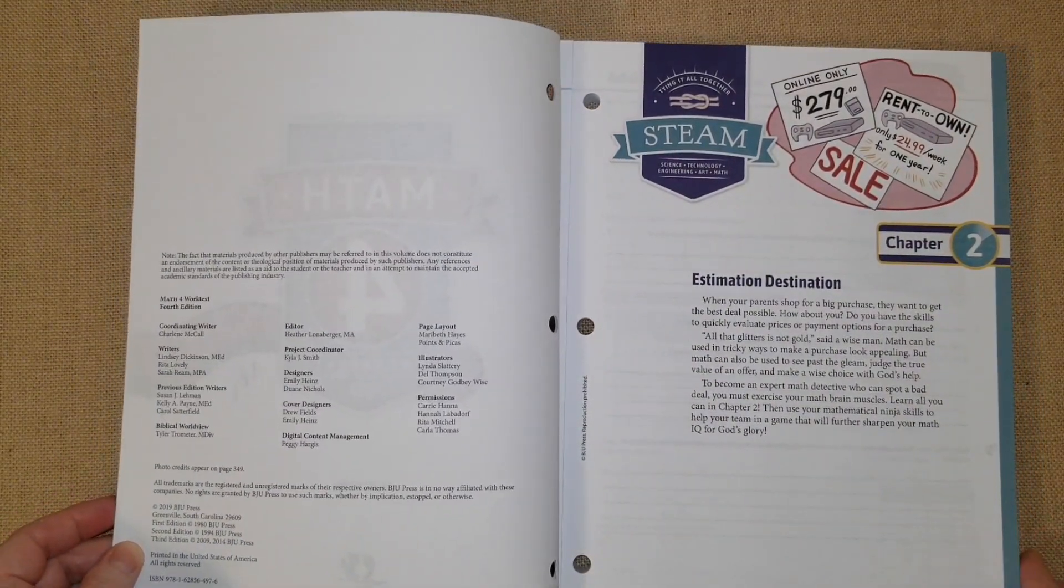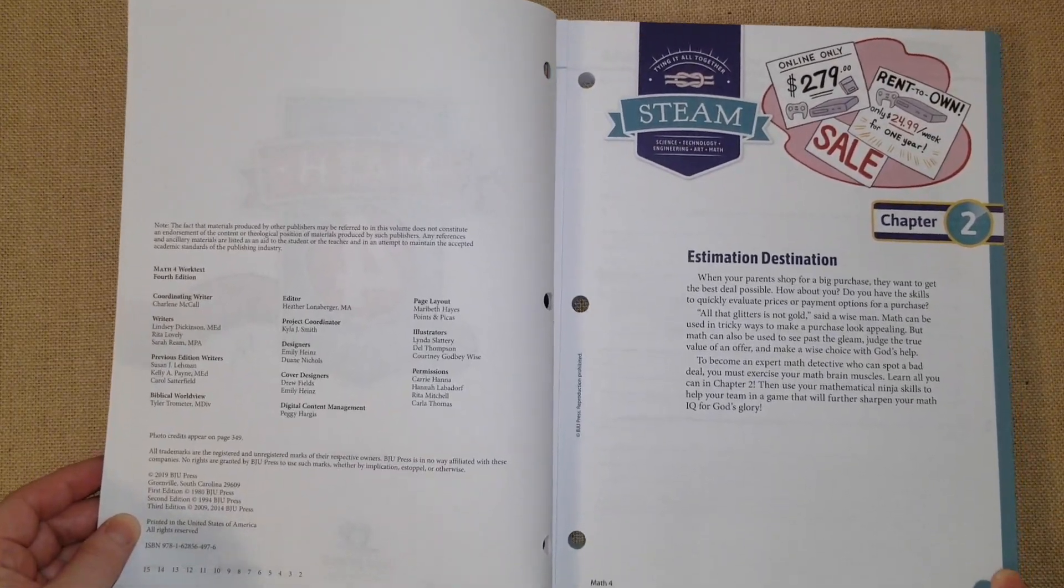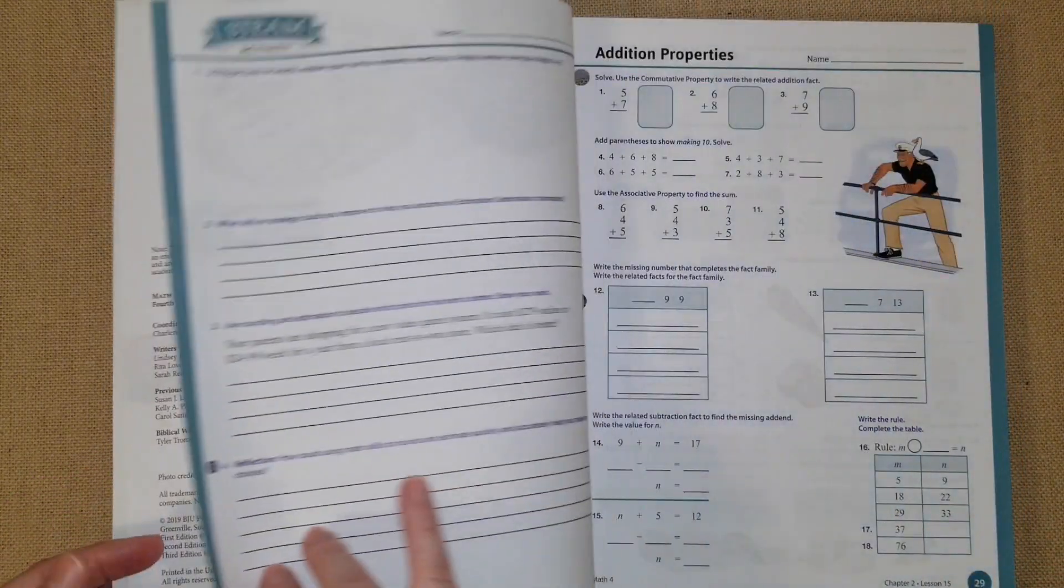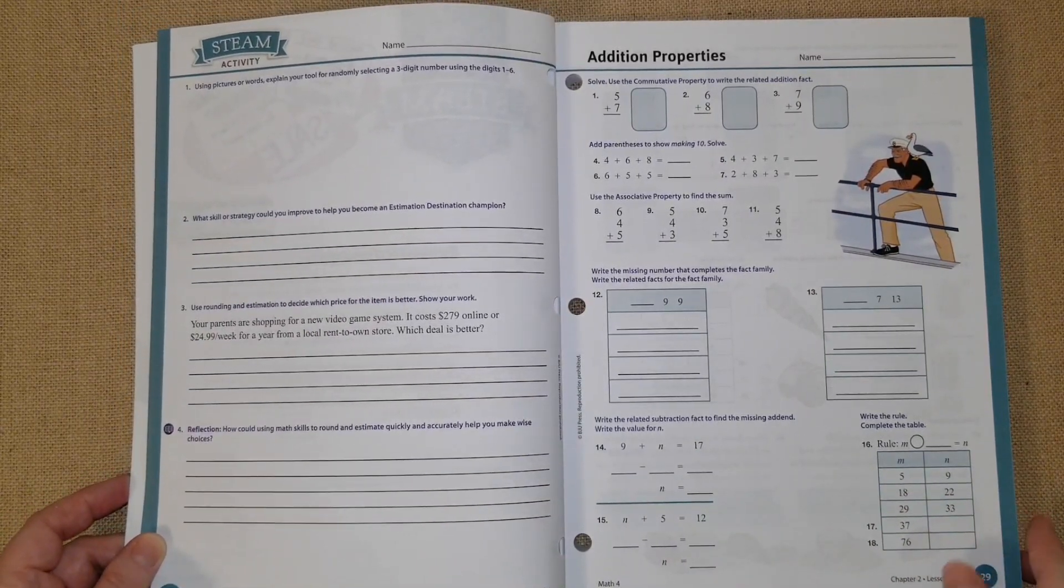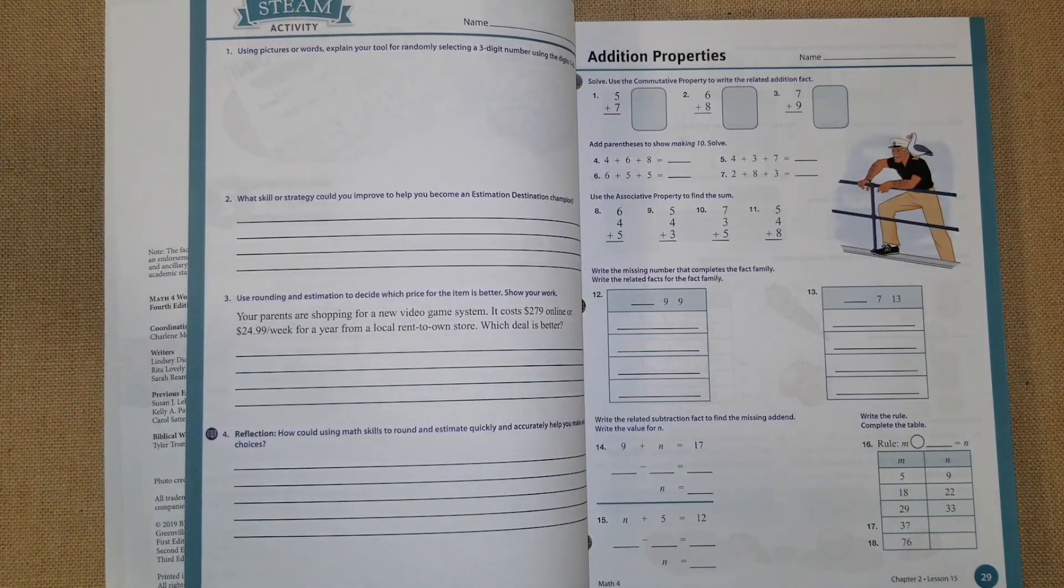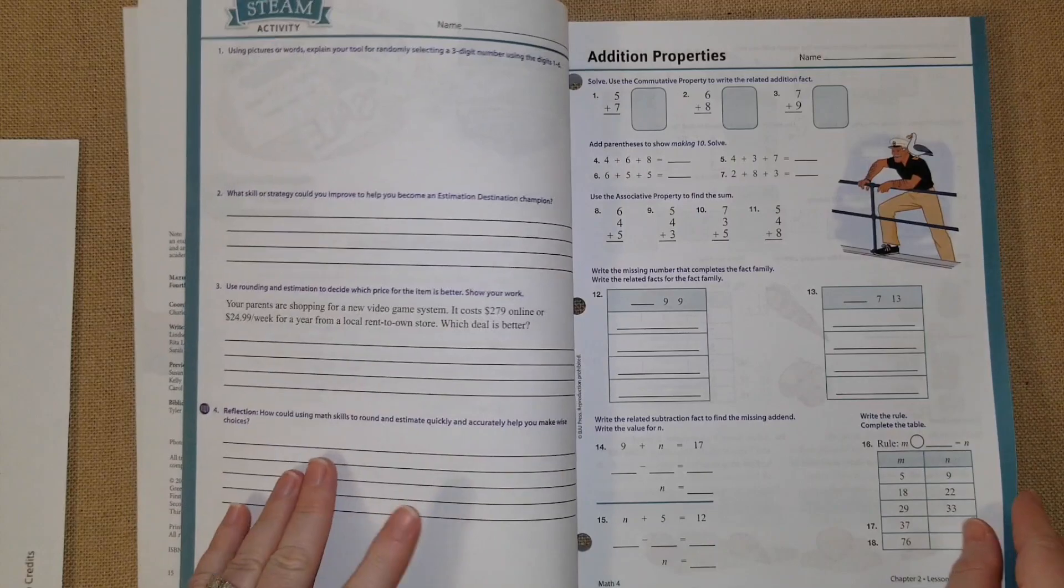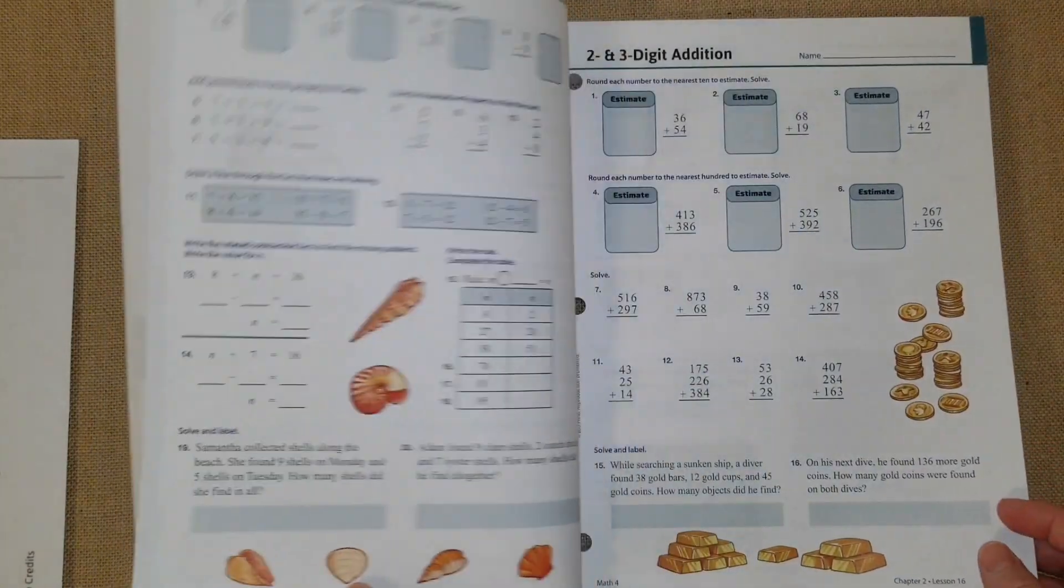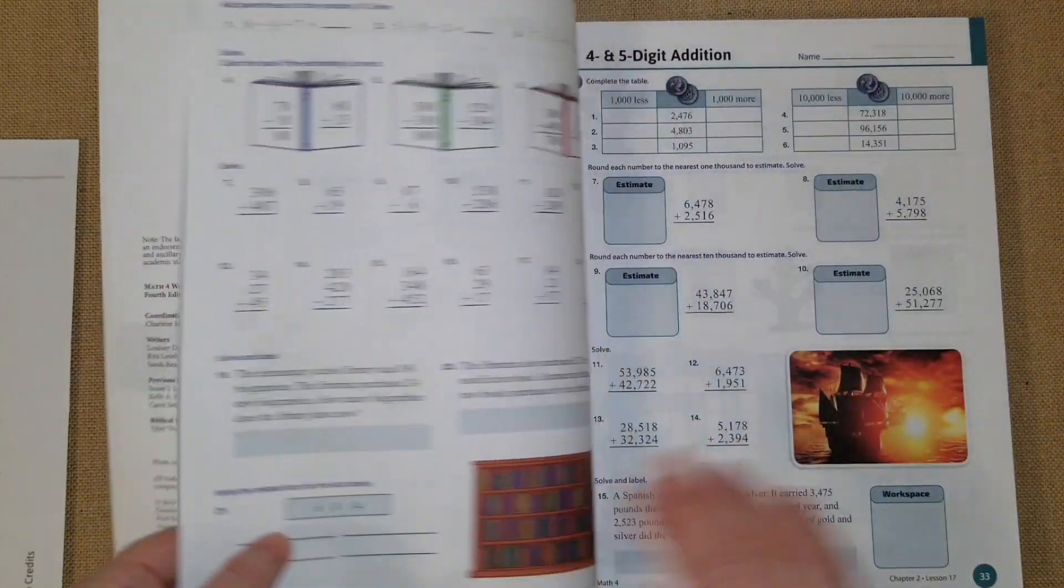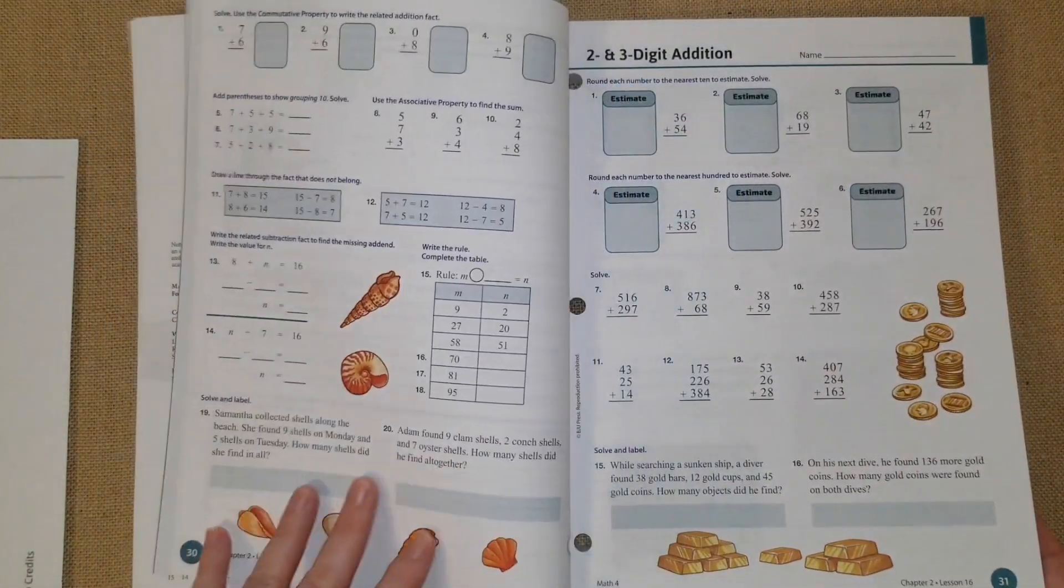Here is chapter two. This is the STEAM activity, the estimation destination, and then here are all of the questions for it. Here are the addition properties.